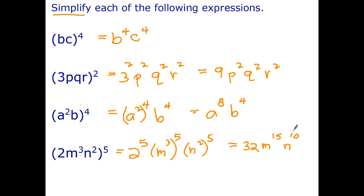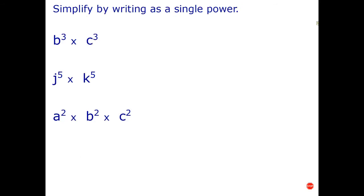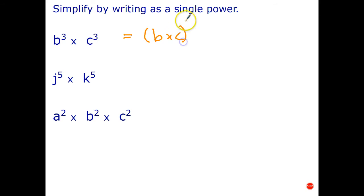We can also use the rule and work backwards. So in this case, we've got it written as a power times a power. Sometimes it's useful to write that as a single power. So b cubed times c cubed is the same as bc all cubed. That's just using index law number 4 in reverse. Stop the video and have a go at the next two questions.